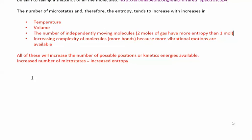To finalize: the number of microstates and therefore entropy will increase with increases in temperature, increases in volume, and increases in the number of independently moving molecules. Two moles of gas have more entropy than one mole because there are more molecules and more possible arrangements. Also, if you compare molecules with the same number of moles but one is more complex — meaning it has more bonds to vibrate or rotate — the more complex molecule will have higher entropy. The number of moles of gas contributes most significantly to entropy.